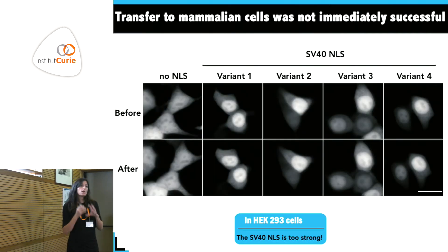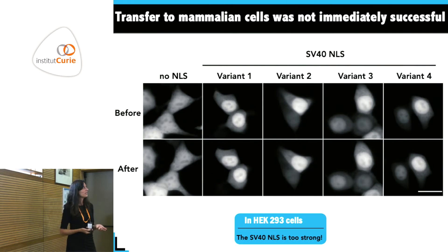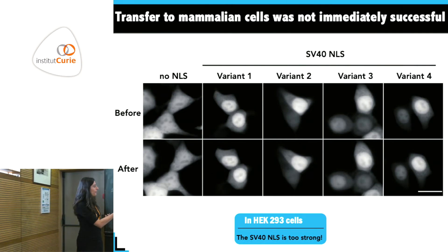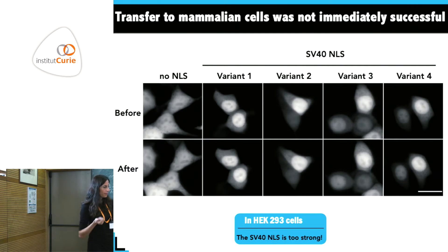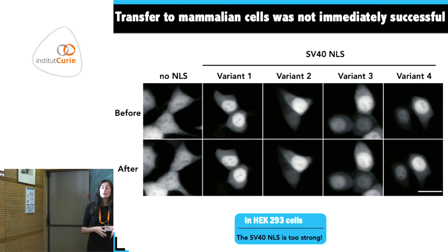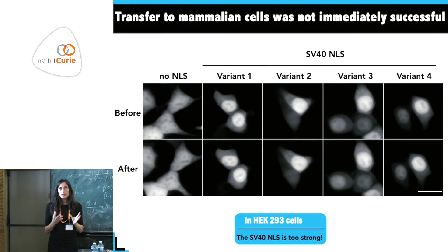We took the construct into mammalian cells and had a bad surprise — it didn't work at all. It was nuclear all the time, even in the dark, which we hadn't seen in yeast. We concluded that the SV40 NLS is simply too strong in mammalian cells.